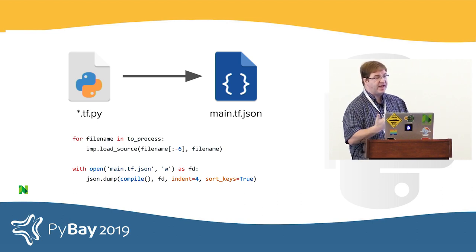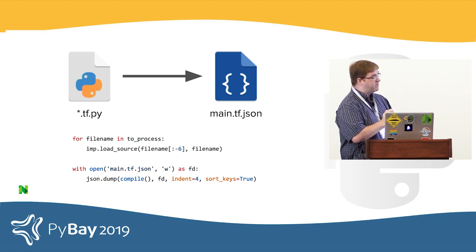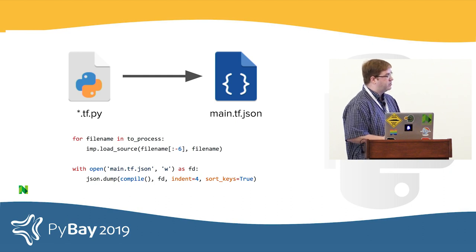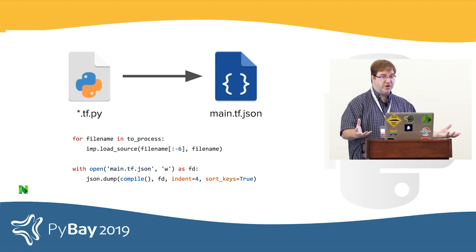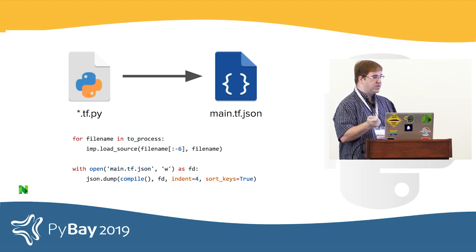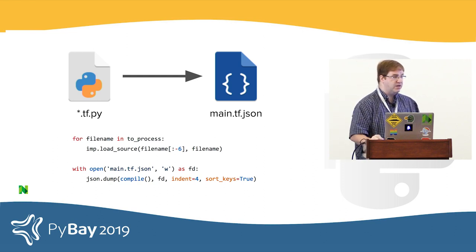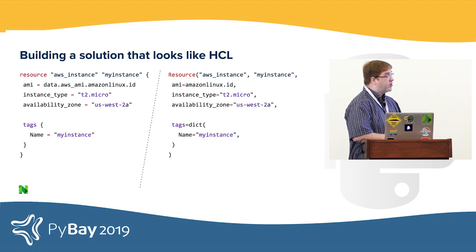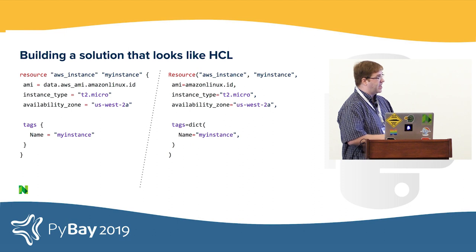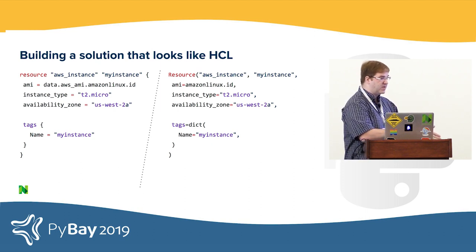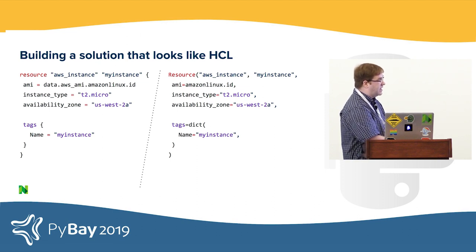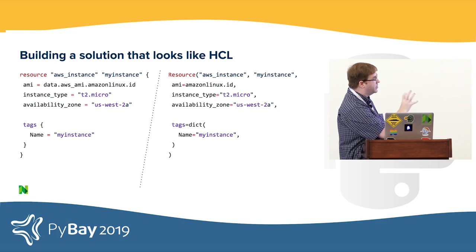The way Terraform Pi works is it's a command line preprocessor. It looks for files named tf.py, imports them using Python's imp module, does a compile function to create one giant dictionary, and then dumps it out to a JSON file. Terraform knows to look for a file named main.tf.json when it's using JSON as its language. One of our goals was we wanted it to look as much as possible like HCL. We wanted to make sure that any developer could go look at the Terraform documentation, look at parameters to create a resource, and just plug them in the same way they're doing HCL. In this case on the right, we're just creating a resource object and passing in various keyword arguments.